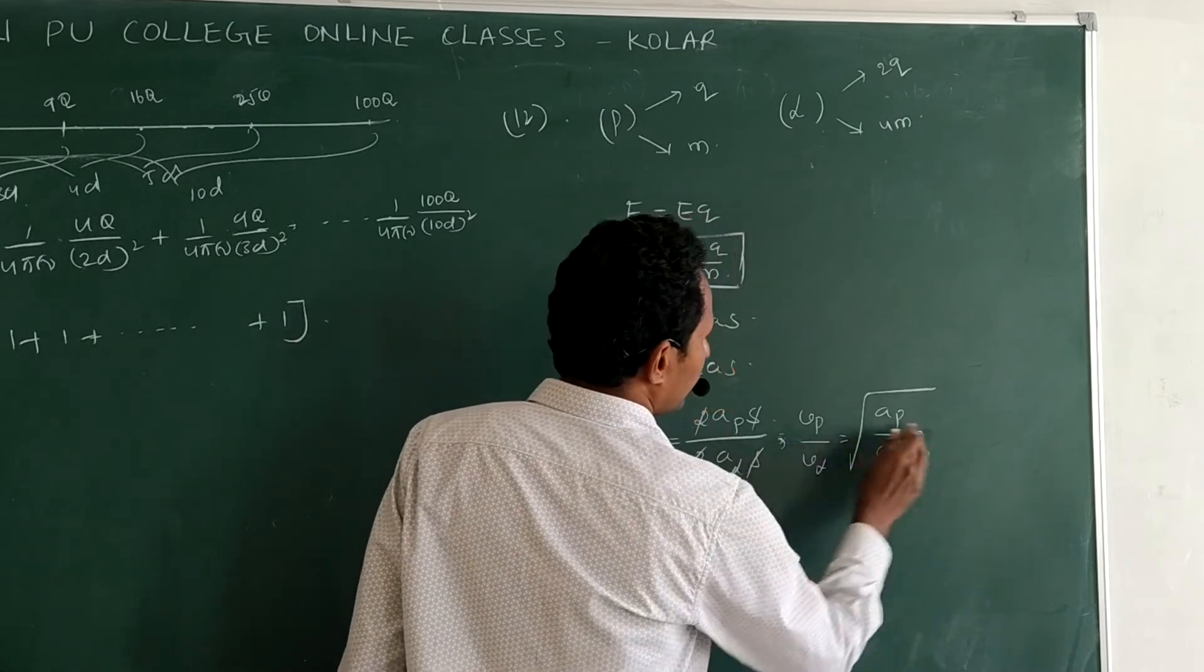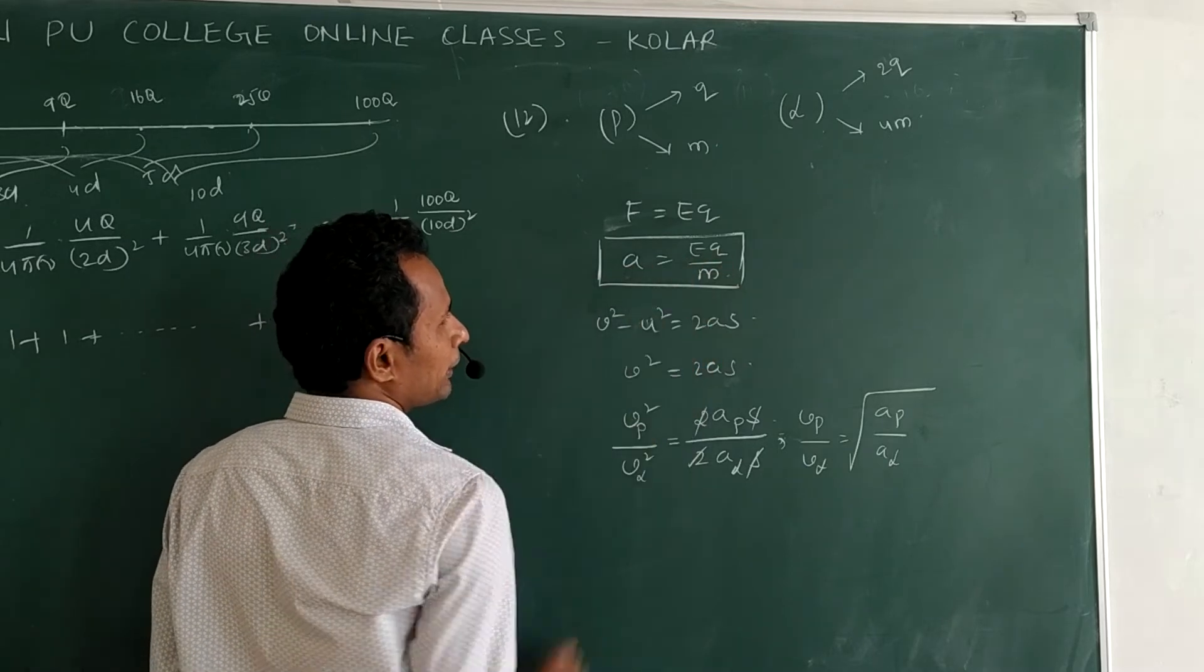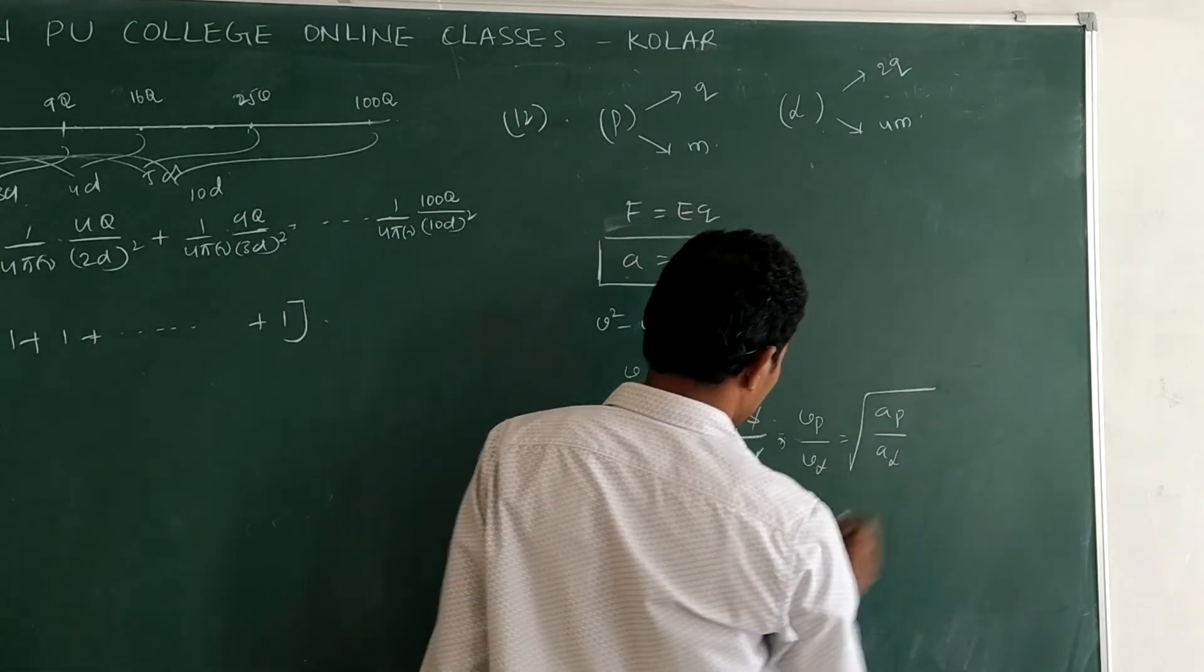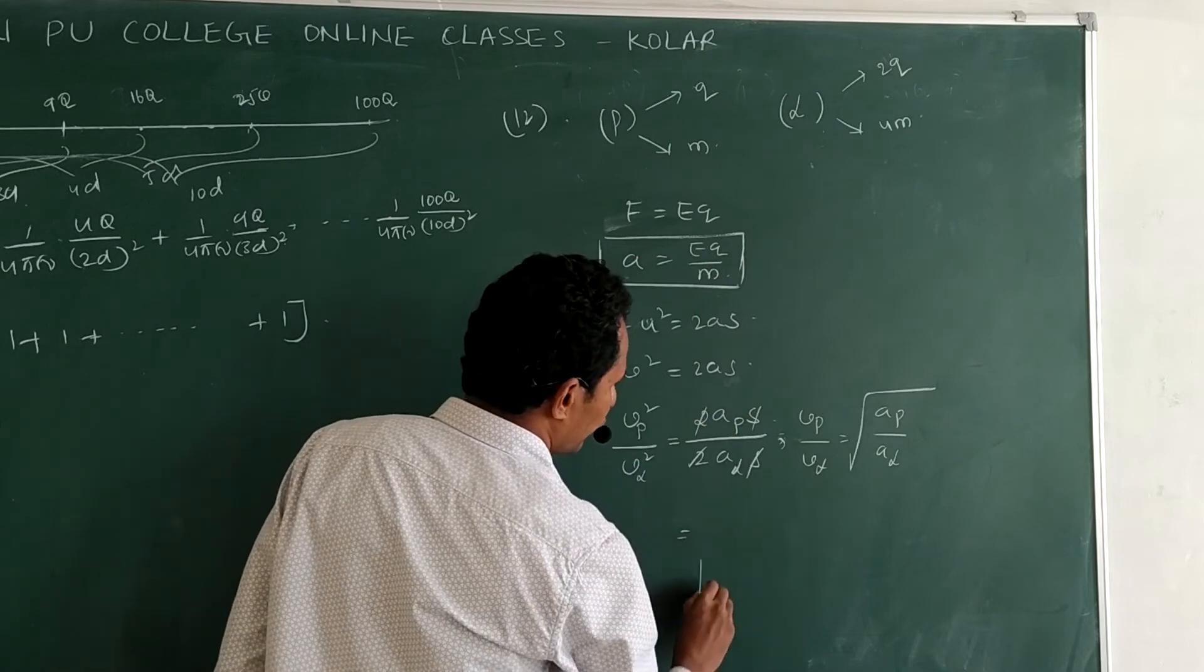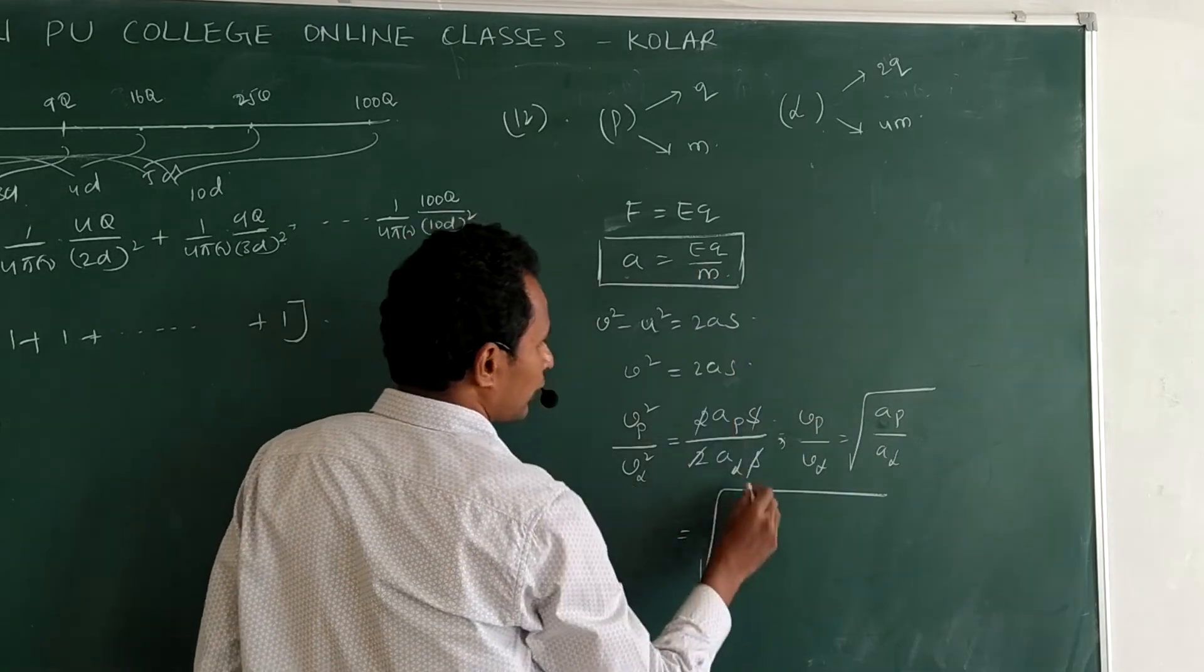Then this will be Vp by V alpha is equal to root of AP by A alpha. Right. AP by A alpha. But acceleration equation is EQ by M. So this we can write like this under root E.